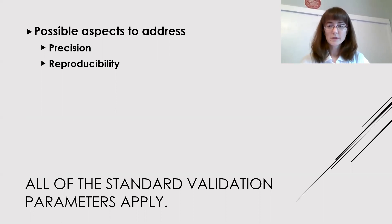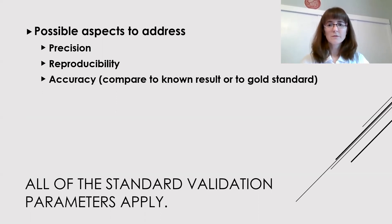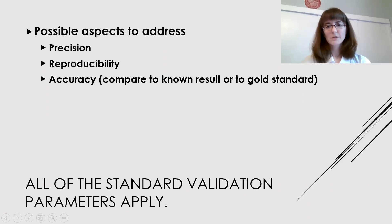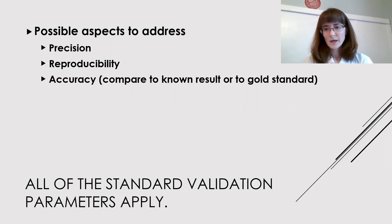In addition to thinking about precision, we also have to think about accuracy. Here we're thinking about, for example, percent recovery — we know how much of a certain sample we've added, and then we run the assay and see how close our answer is. Or we're going to compare the immunoassay that we're testing to a gold standard assay, either another immunoassay or a different method of analysis.